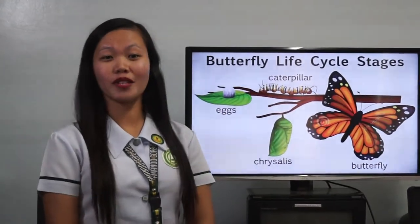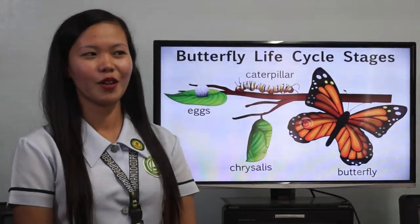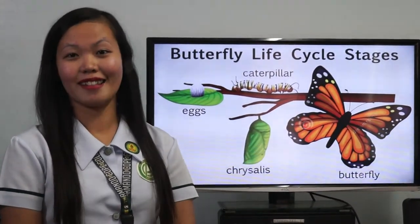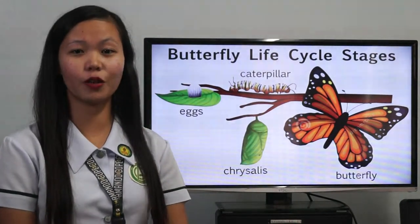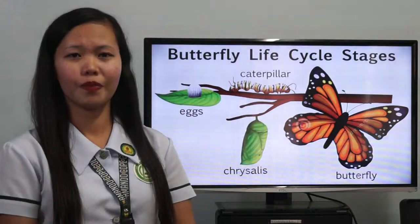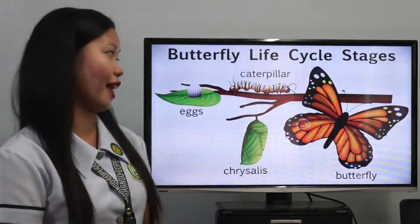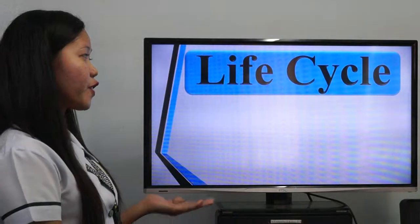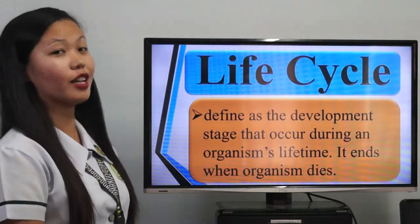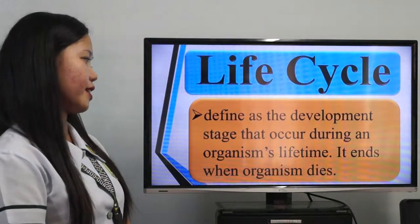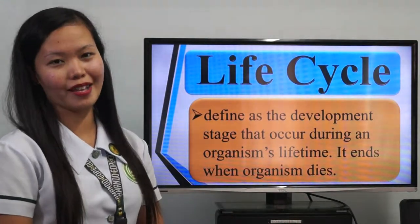Can you imagine if humans were born as full-blown adults? Thankfully, we are born as infants and slowly go through stages before reaching adulthood. These stages are called a life cycle. A life cycle is defined as the development stages that occur during an organism's lifetime. It ends when an organism dies. Let's explore a butterfly's life cycle in detail, including its four stages of life.